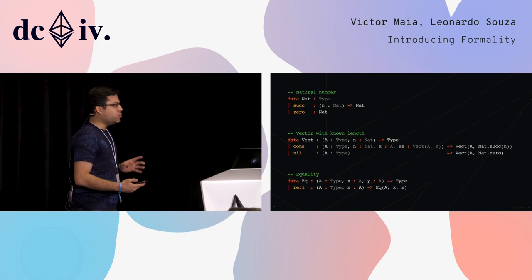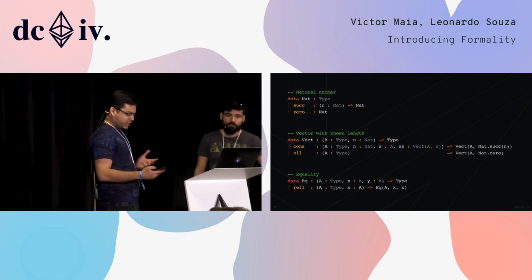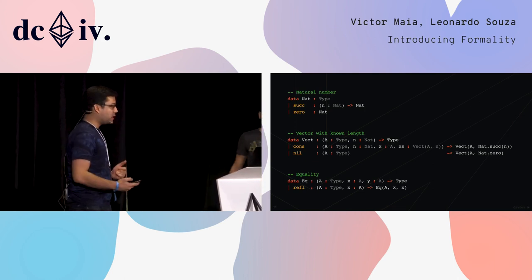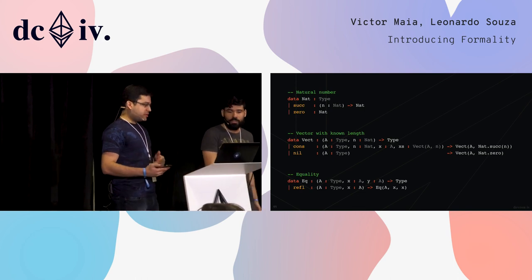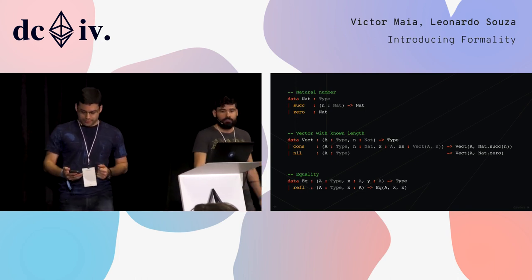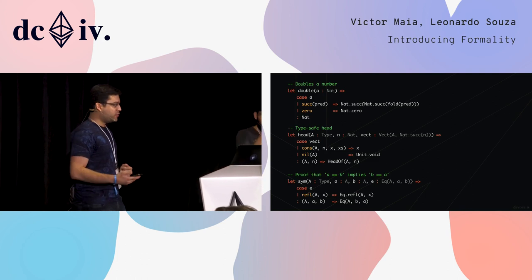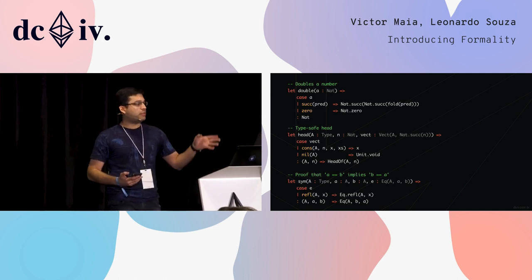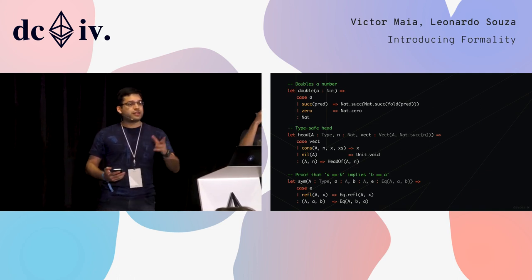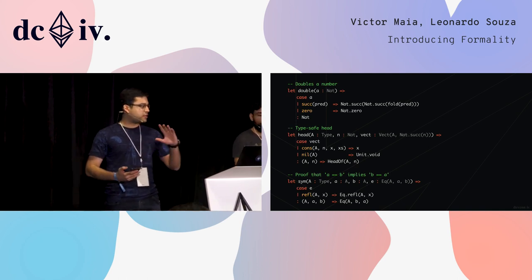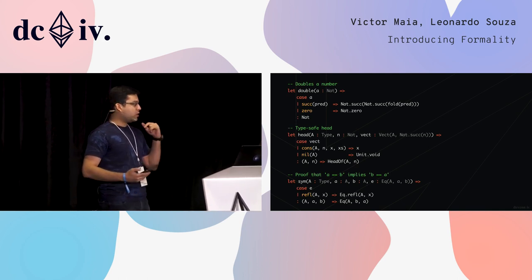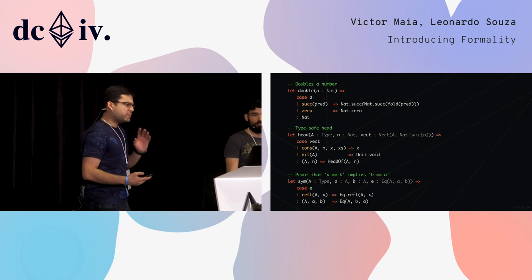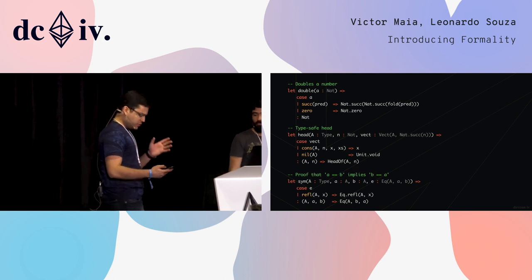Formality programs have two building blocks. One: inductive data types — they represent data, like natural numbers, vectors, equality certificates. And two: functions — they represent computations and proofs. Some things like doubling a number, fetching the first element of a vector, or proving the symmetry of equality. But that's pretty standard in proof languages, so let's move on to the fun part.